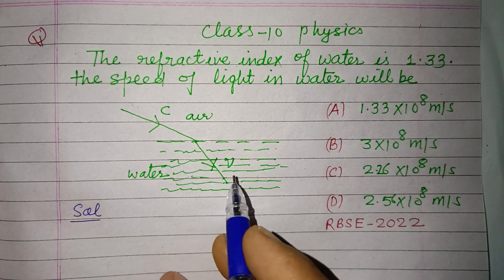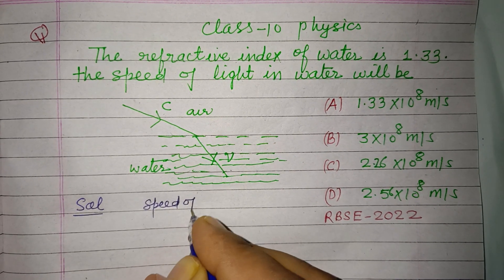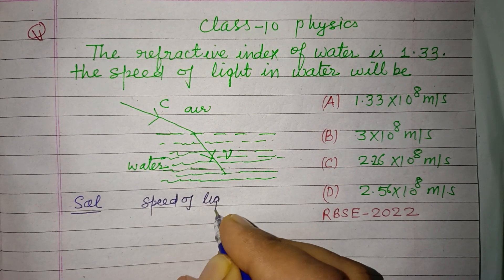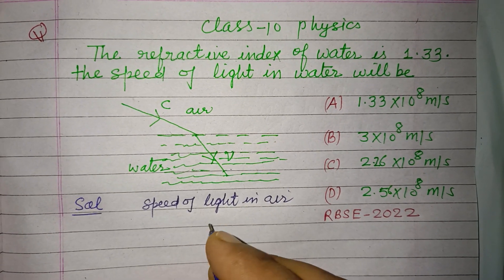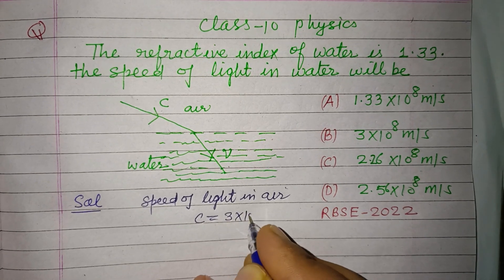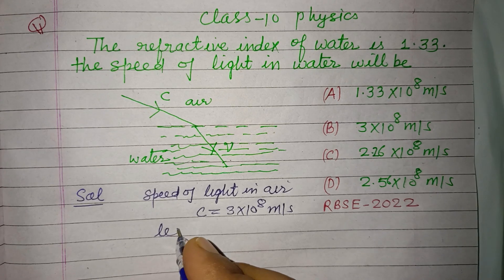So students, in this question light is going from air to water. The speed of light in air or vacuum, that is c, equals 3 into 10 to the power 8 meter per second.